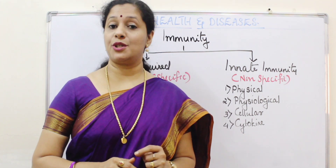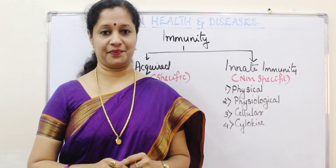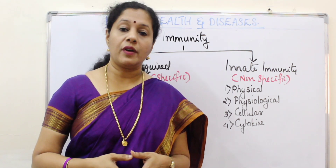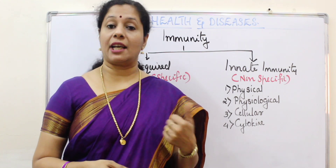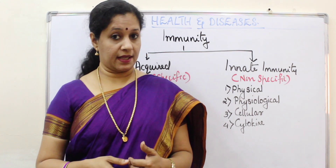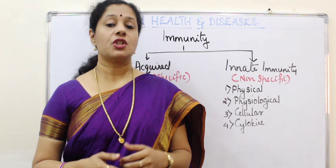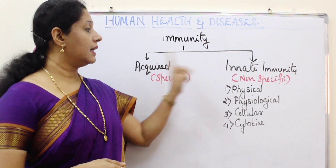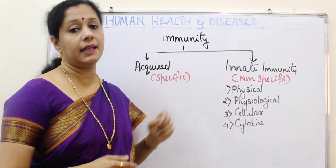Today we are going to learn the most important part of this chapter, that is immunity. So what is meant by immunity? The overall ability of a host organism to defend against microbial infection by their immune system is called immunity. So immunity in our body can be of two types: first is innate immunity, and the other type is acquired immunity.